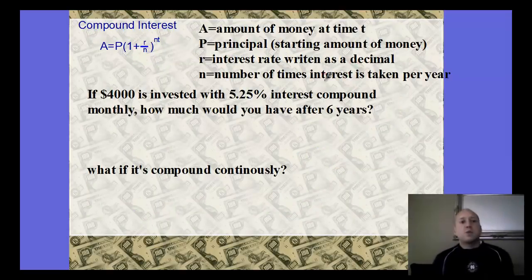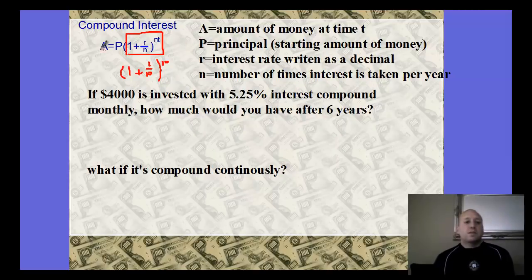Last kind of example is our money, compound interest. When we're using compound interest, these are the variables we tend to use and what they mean. A is the amount of money at time t, so that's how much money you have. P is the principal, the starting amount of money. r is the interest rate written as a decimal. n is the number of times interest is compounded per year. And then t is the amount of years or the time.